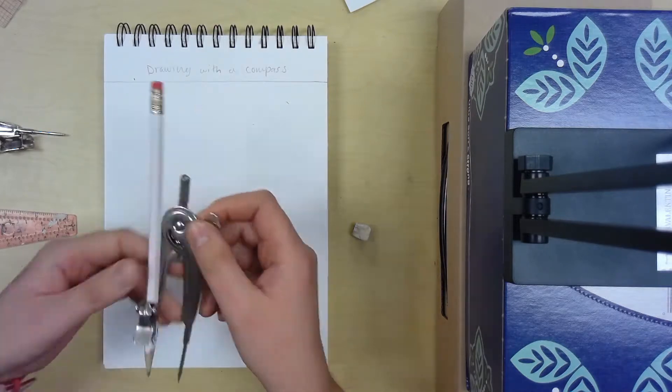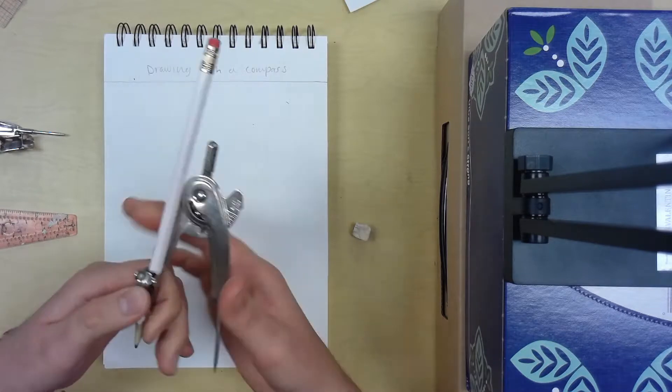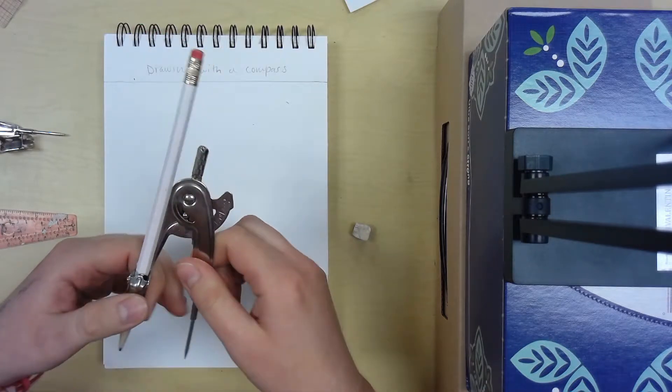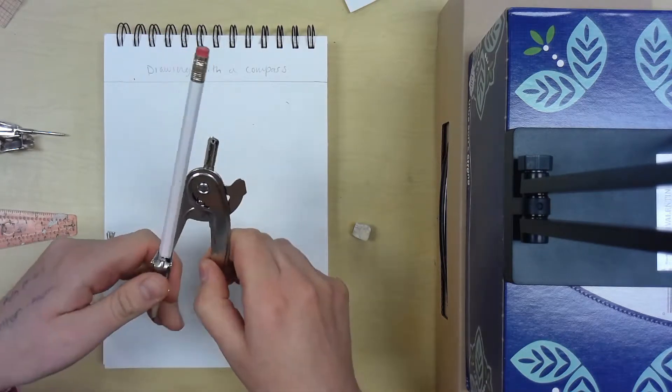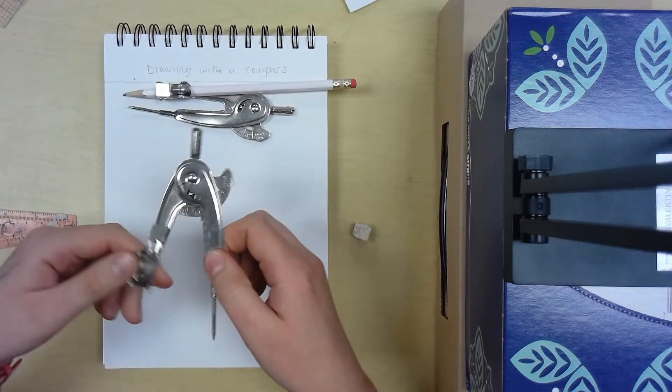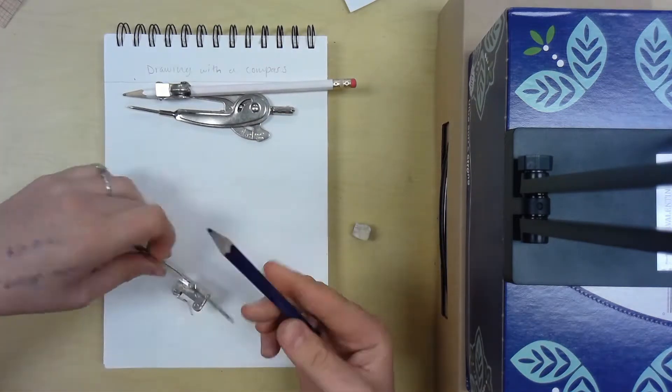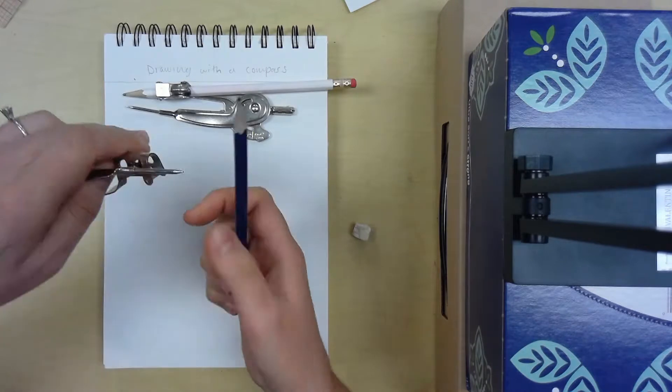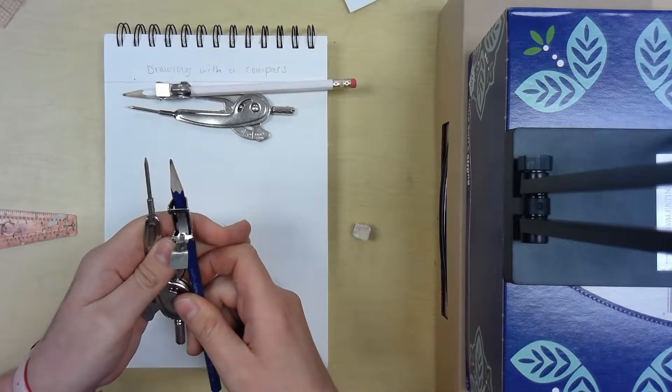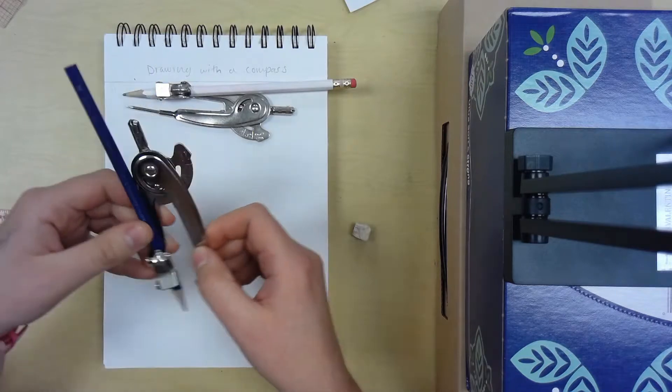I just want to show you the difference between a compass that's pretty tight, like it's not broken at all. This compass will work pretty well. This is another metal compass and I'm going to put a pencil in here and see what happens. I'm doing the same thing, putting it through this little slot and then lining it up with the metal rod so that it's the same length.